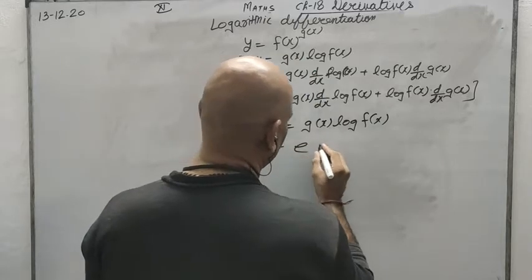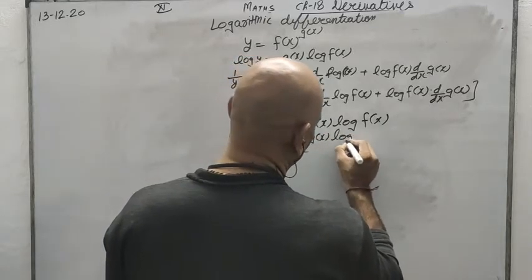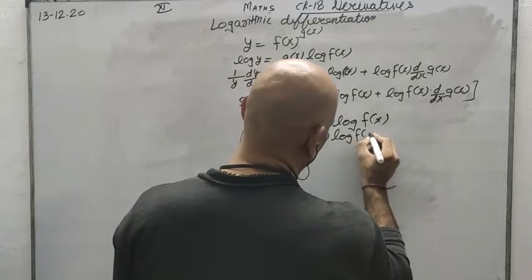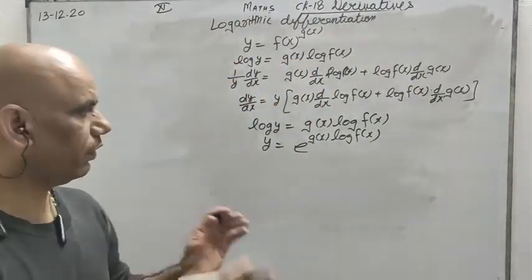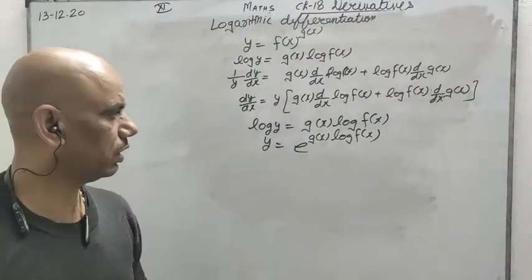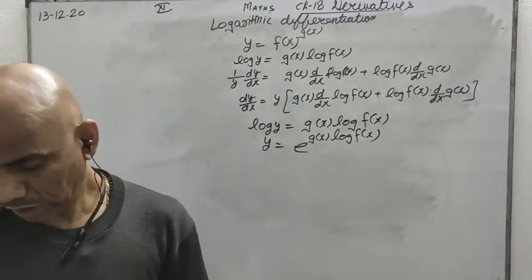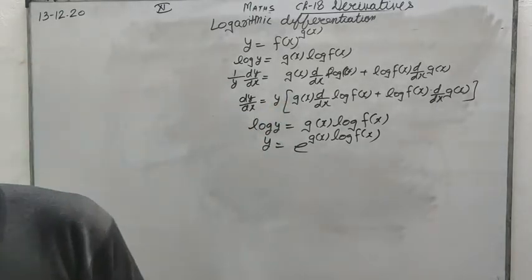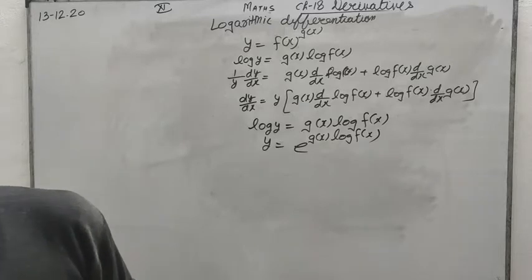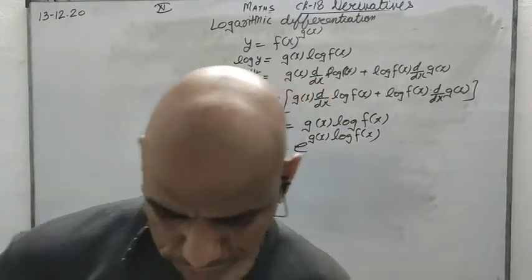Differentiating, it becomes 1 by y times dy by dx equals g(x) times d over dx of log f(x) plus log f(x) times d over dx of g(x). Multiplying through by y: dy by dx equals y times [g(x) d over dx of log f(x) plus log f(x) d over dx of g(x)]. Also note that log y equals g(x) log f(x) means y can be written as e to the power g(x) log f(x) — both forms will be used.